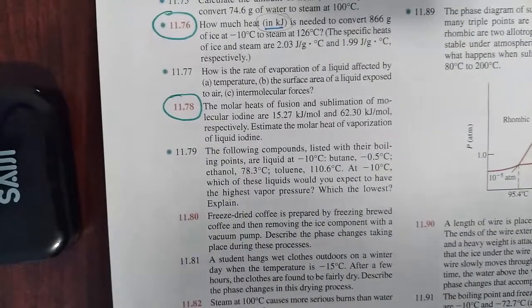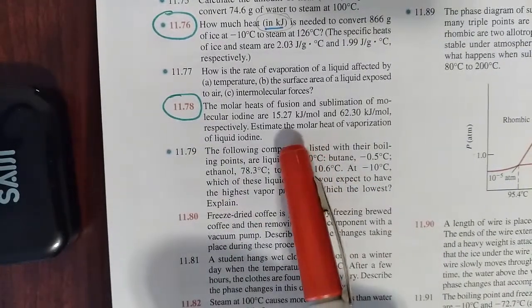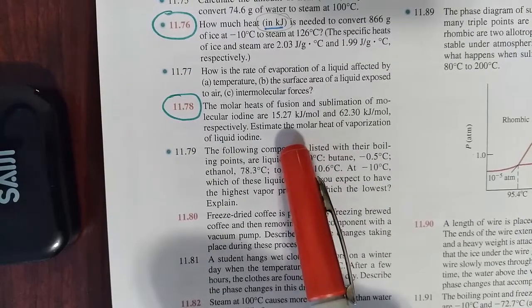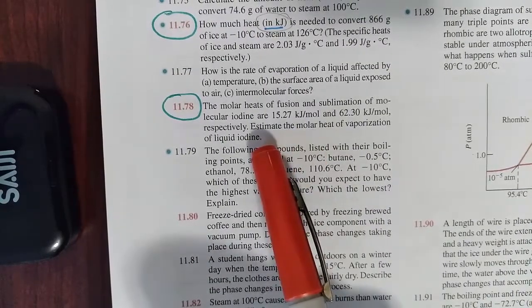In this video, we will calculate the molar heat of vaporization, given the molar heats of fusion, which is 15.27 kilojoules per mole for iodine.